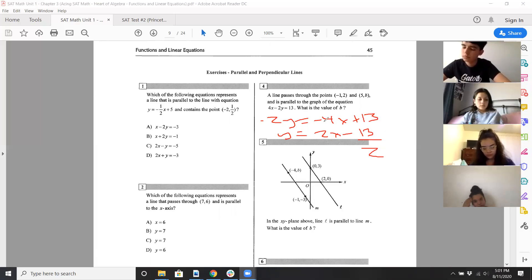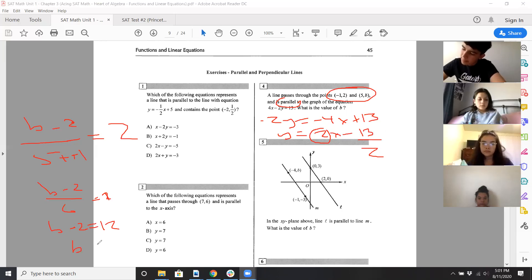So you divide both sides by negative two. So since you want to be parallel, you want the same slope. And then I just set the slope formula b minus two over five minus negative one equals two. So b minus two over six equals two. b minus two equals twelve. b is fourteen.